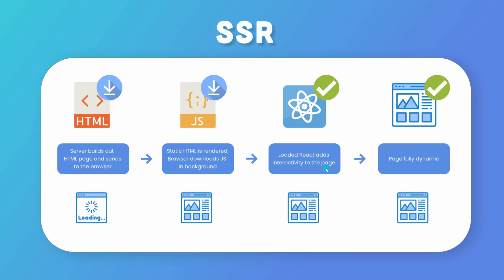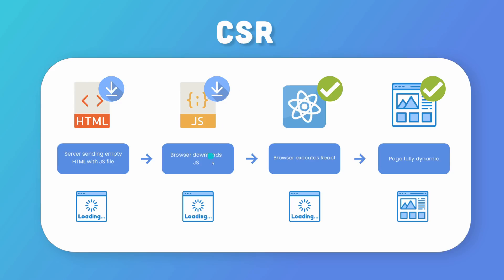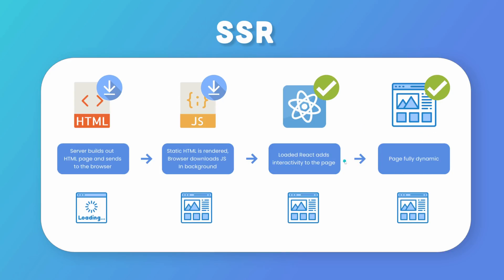Now, what's the downside of this? Well, if you go from page to page, it's going to need to build out another HTML file and do all the fetching. So it's going to be quite slow. The advantage is the initial paint — the first load is going to be really quick — but navigating between pages is going to be slow. Whereas with CSR, client-side is initially slow because we have one big bundle JS, but once that loads up, everything else is really quick.